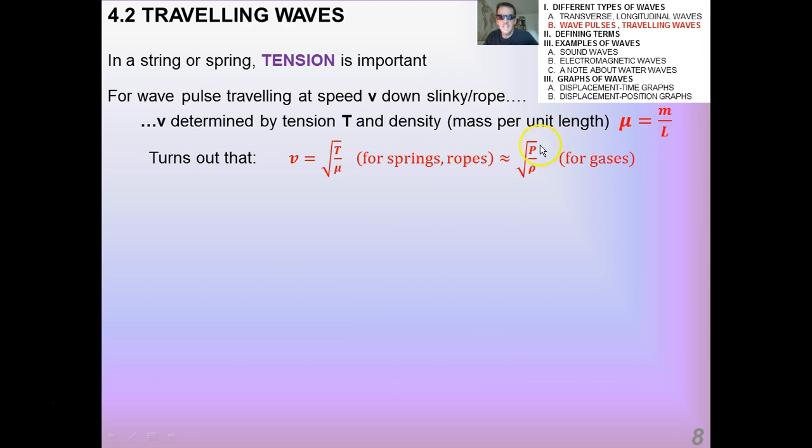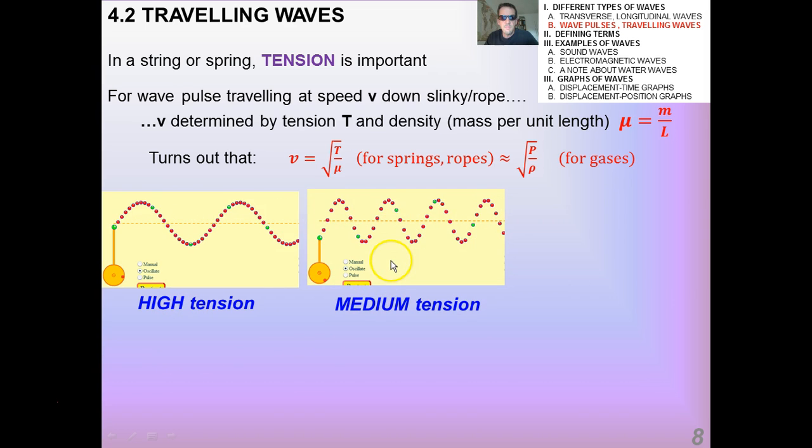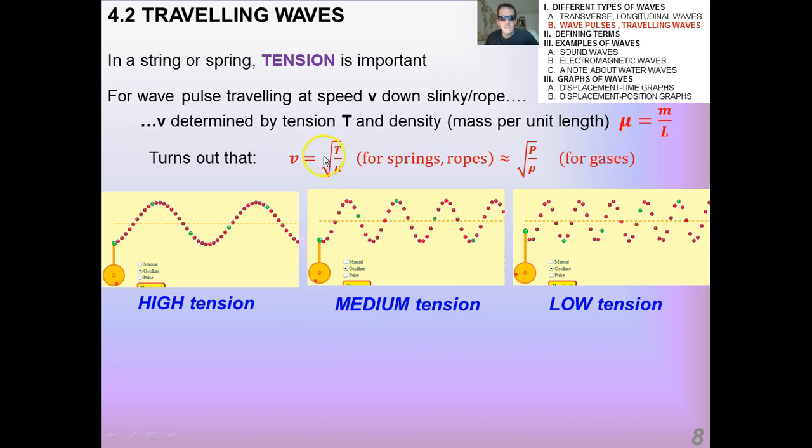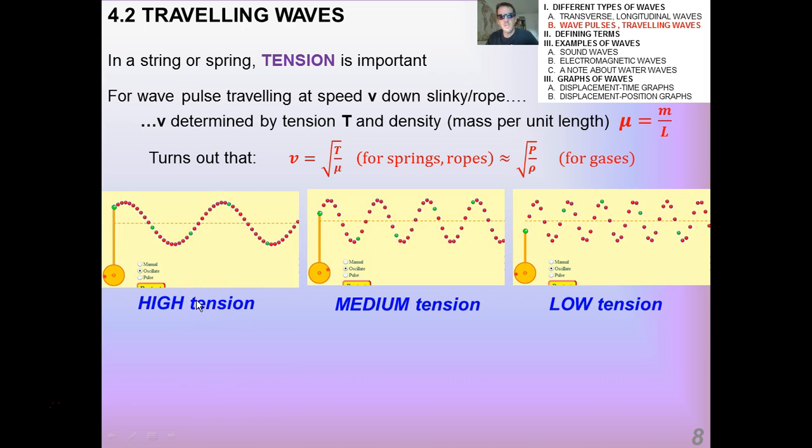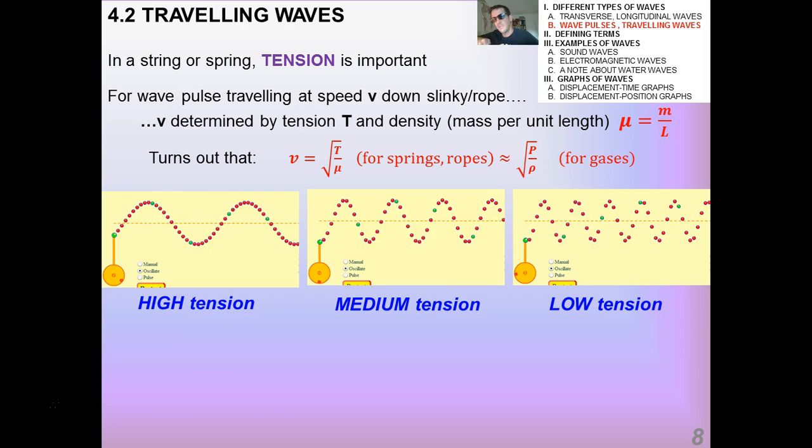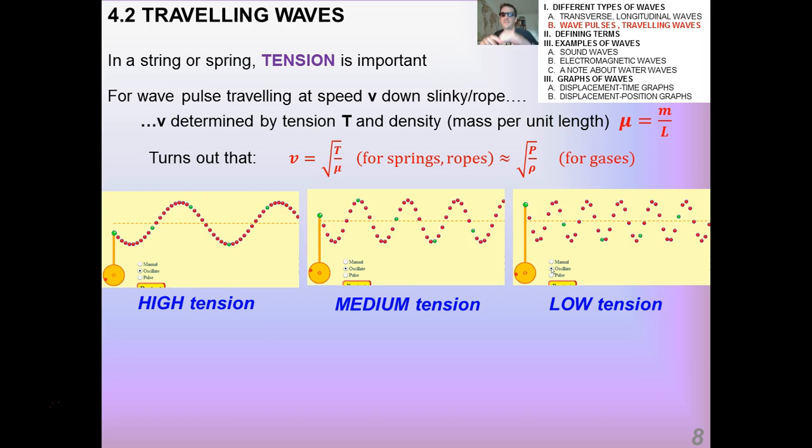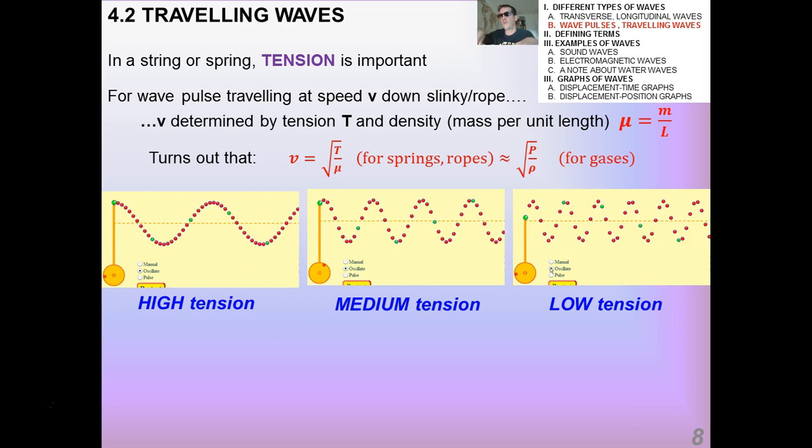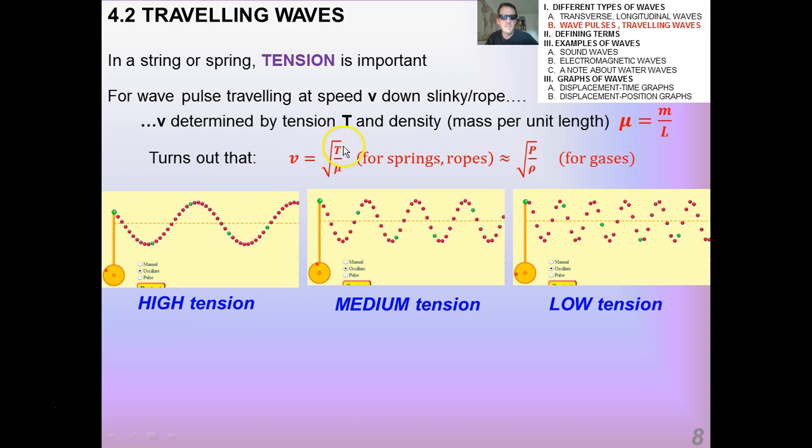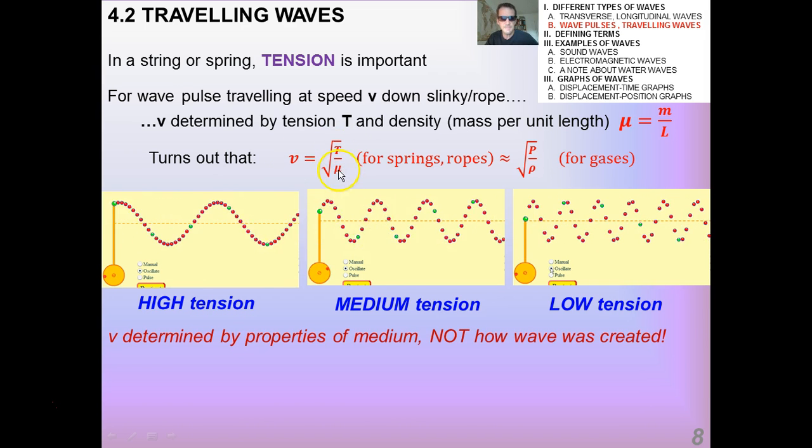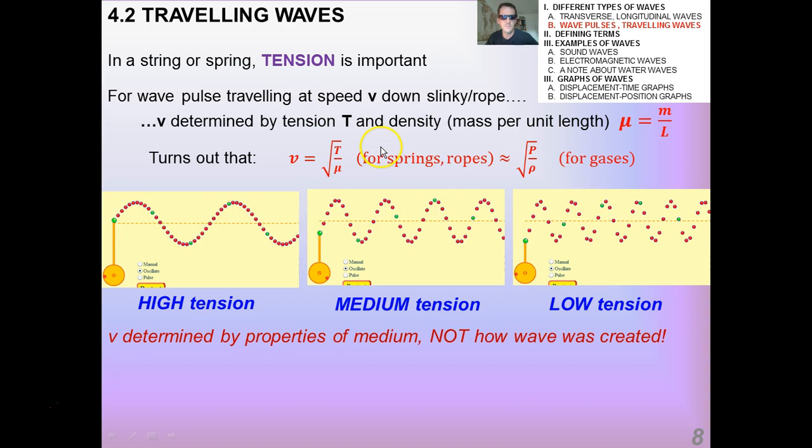For springs and ropes, and for gases, it's proportional to the pressure over the density, the square root of. So, just to show you a couple of differences here, we have a very high tension here, medium tension, and a low tension. So, you can see that as the tension is higher, the speed is greater, and that may be common sense. If you think about a rope that's pulled super tight, and you send a wave through it, that wave will go through very fast. If it's very loose, and you send a wave, that wave will be kind of wimpy and won't move very fast. And it turns out that the wave speed and tension are related as a square root function. You're not going to have to derive this, but you should be aware of it.